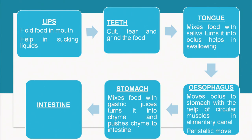Let us talk first about the mechanical process. How do lips help? They hold the food in the mouth and they help in sucking liquids. Then teeth — they cut, tear and grind the food. Then comes the tongue. It mixes the food with saliva, turns it into a bolus and helps in the swallowing of food.